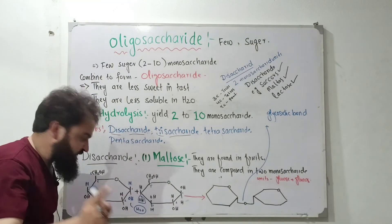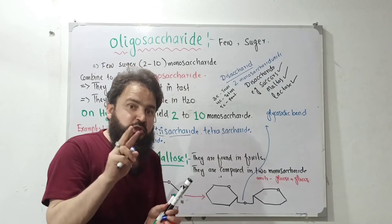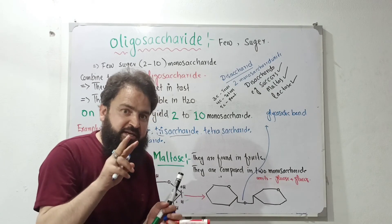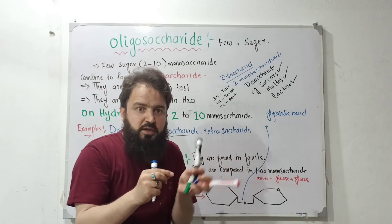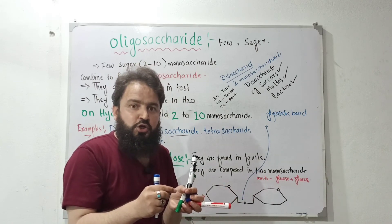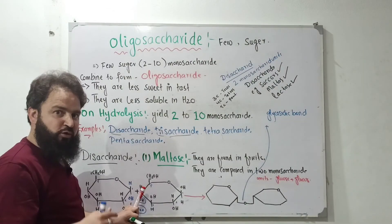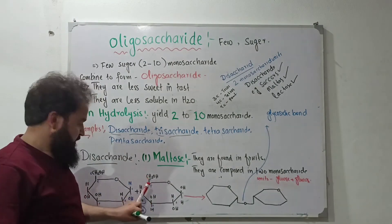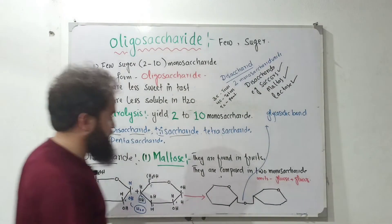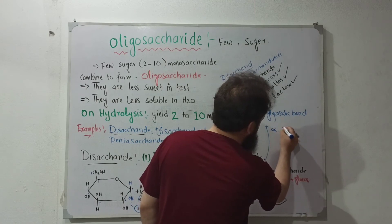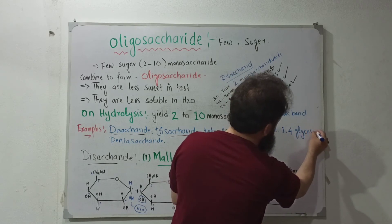Carbon-1 OH group and carbon-4 OH group of the two glucose units form the bond. Carbon-1 and carbon-4 of the two glucose units bond together, and a water molecule is removed. This forms the Alpha-1,4 glycosidic bond.